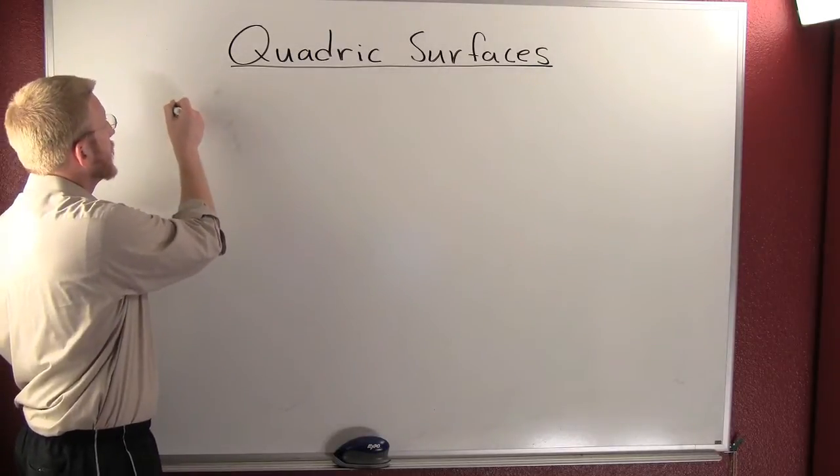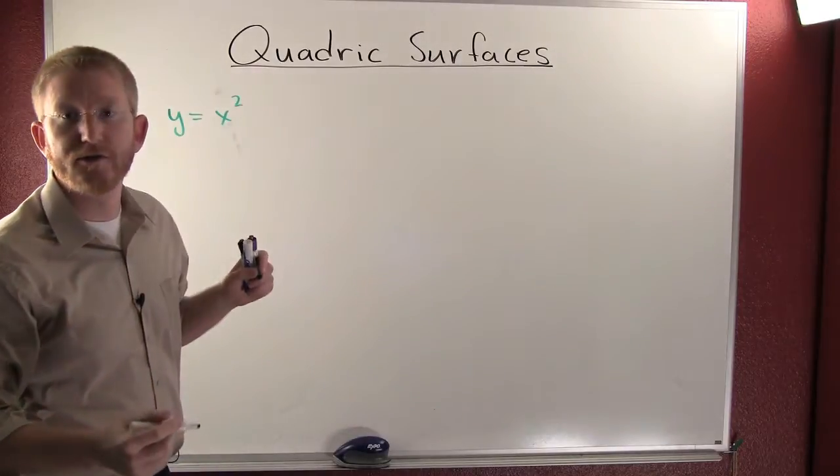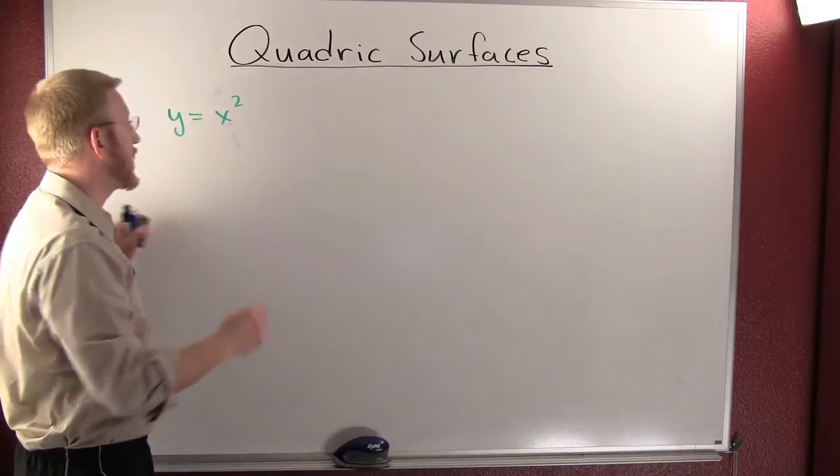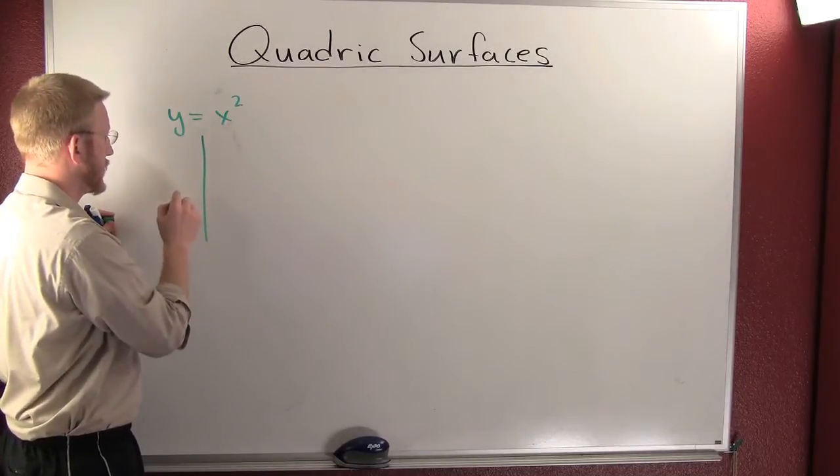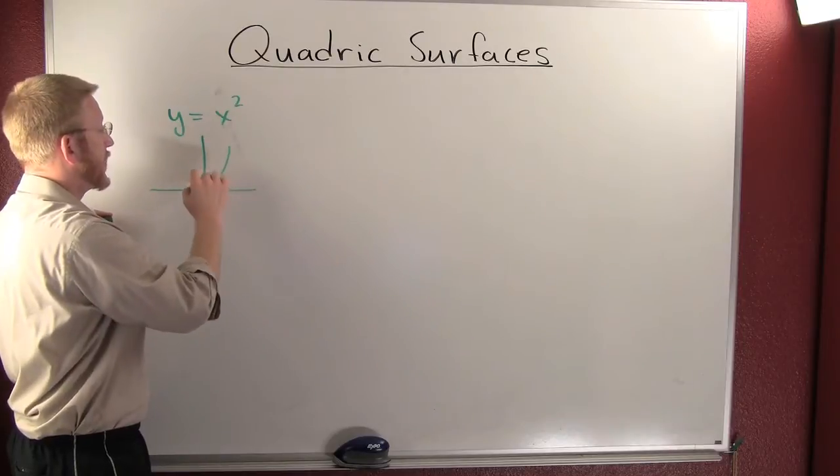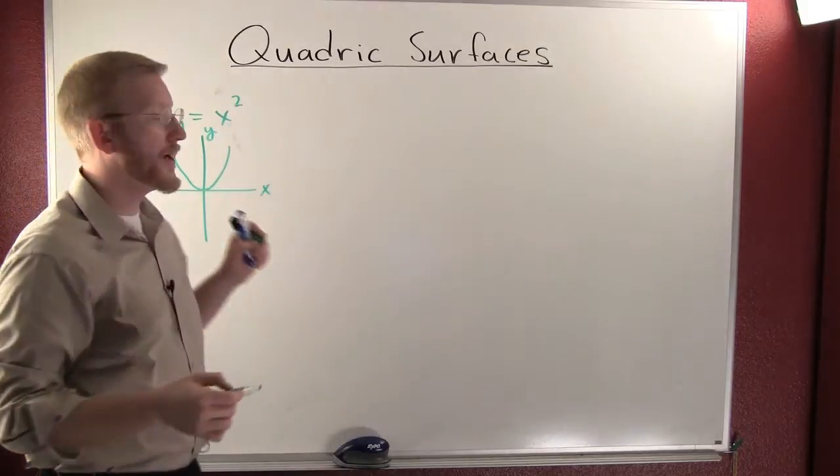The first one we're going to look at is y is equal to x squared. We know this thing to be a parabola. Let's go ahead and graph that now. It's a parabola opening up on the y-axis, this being your x and that being your y.